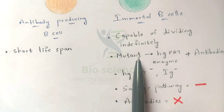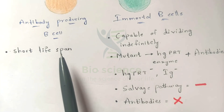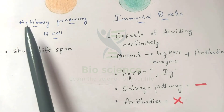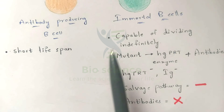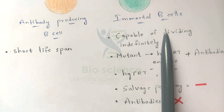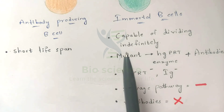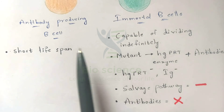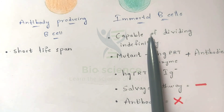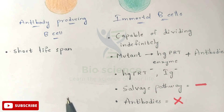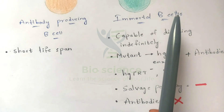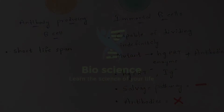In the antibody-producing B cell, the salvage pathway is not blocked because it has no mutant. So the antibody-producing B cell produces antibodies. In contrast, the immortal B cell has a mutant and cannot produce antibodies. To summarize: the antibody-producing B cell produces antibodies due to absence of a mutant; the immortal B cell does not produce antibodies because it carries the mutant.